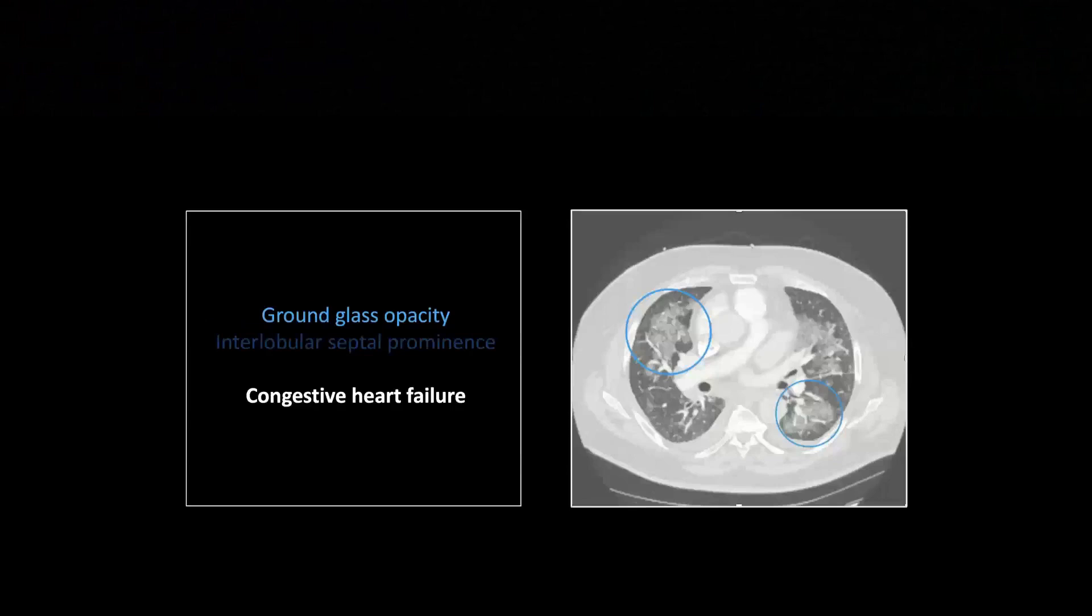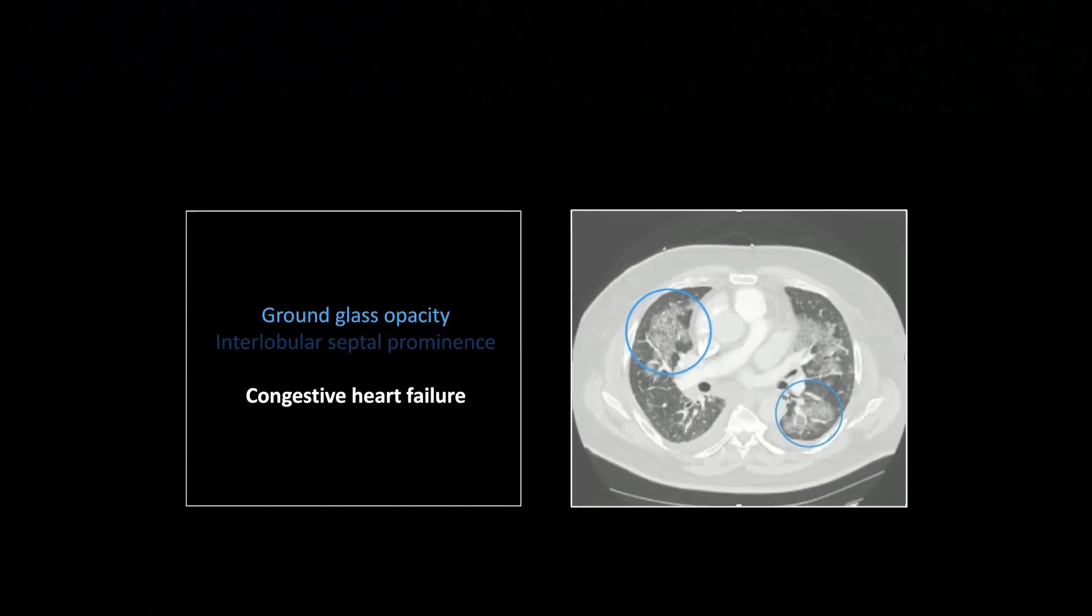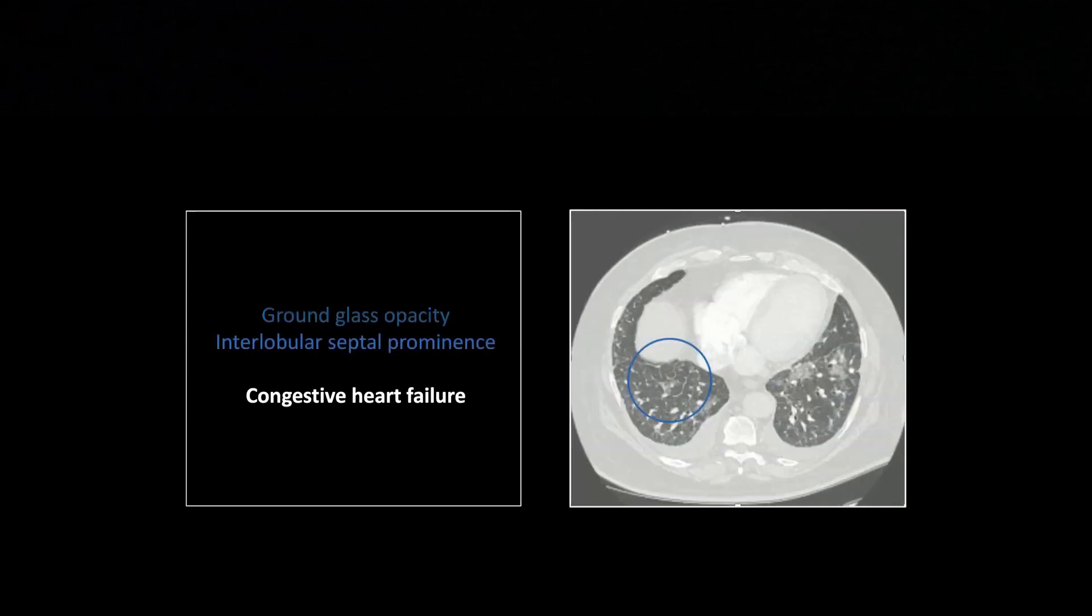Next one is another ground glass opacity. You can see that density. There might be a little intralobular septal thickening there, but not dramatic. You still can discern the underlying vessels and other structures. But this one is central in its location. It's not peripheral. And it's extreme in the subpleural and visceral sparing. You can really see it is not going out to that pleural surface or to any of the fissures. That is a very helpful finding.